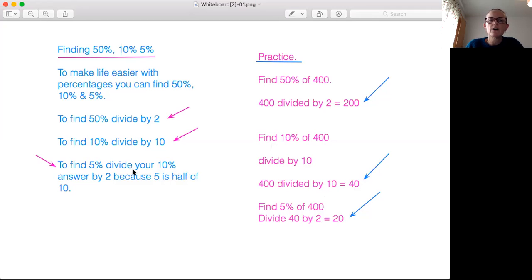To find 5% you divide your 10% answer by two because five is half of 10. So if you're ever told to find 5% of anything what you can do is you find 10% first and then you divide that answer by two.